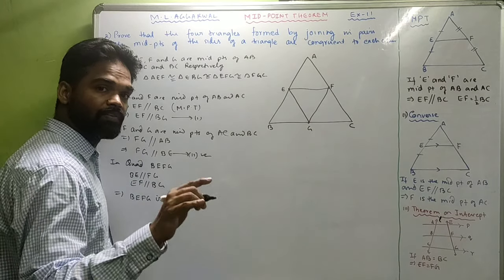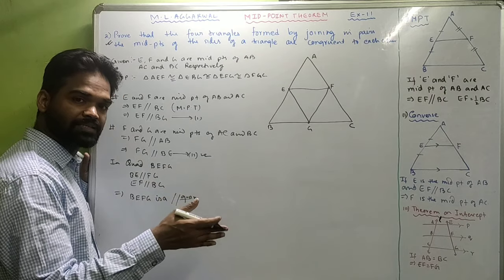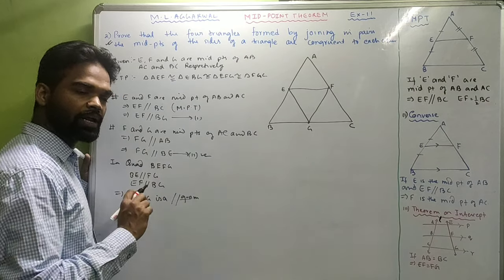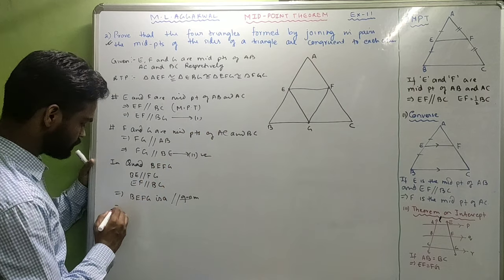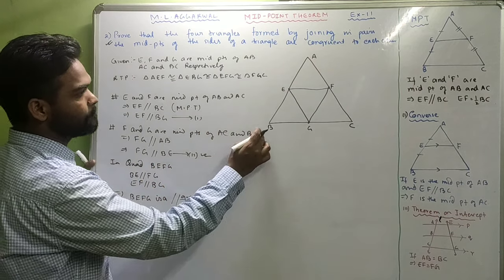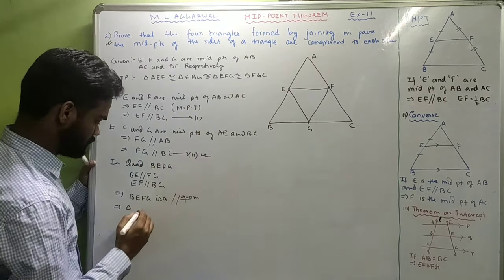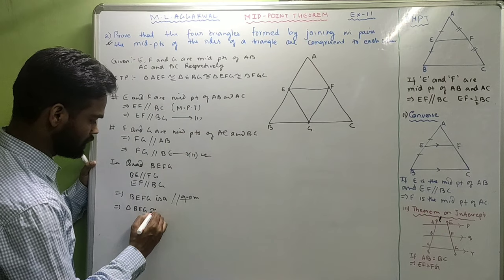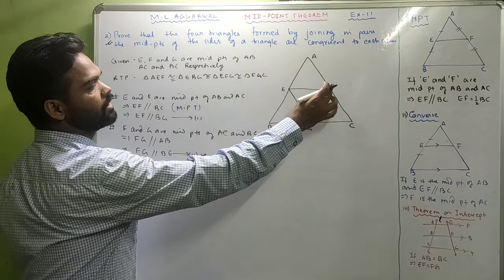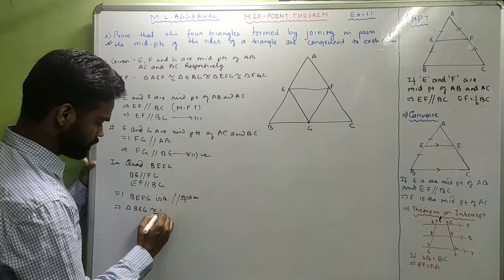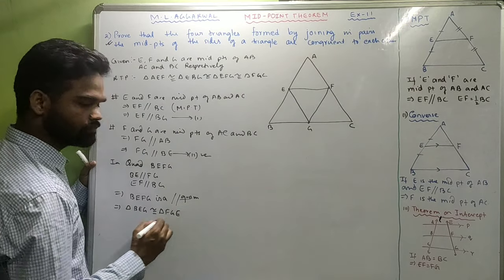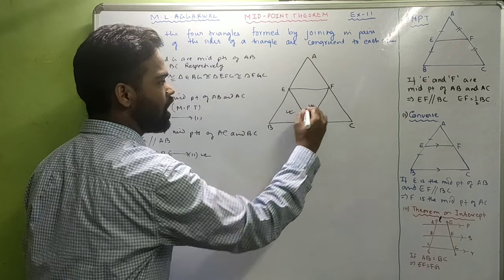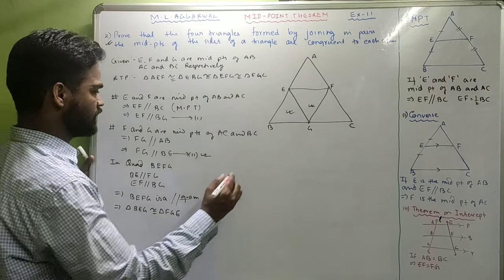In a parallelogram, the diagonal bisects it into two congruent triangles. So triangle BEG is congruent to triangle FGE. These two triangles are congruent.